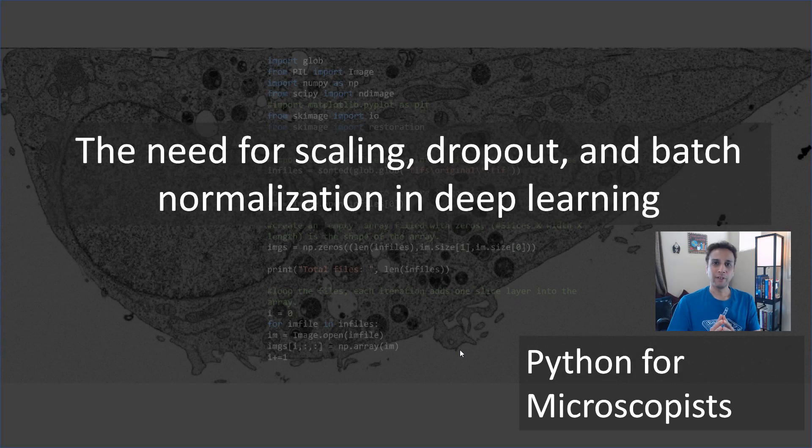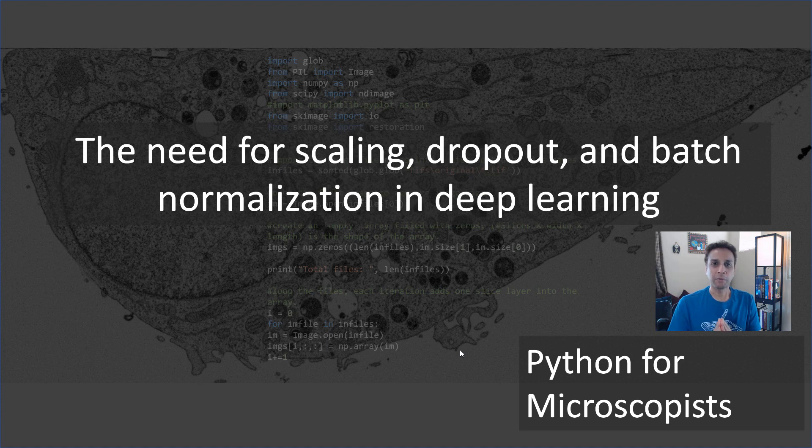Hey guys, you're watching Python tutorial videos on my YouTube channel, Python for Microscopists. In this video, I'm going to talk about scaling, dropout, and batch normalization. These are some of the factors that can actually influence the training rate or even accuracy of your results.